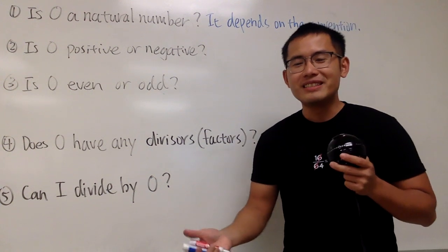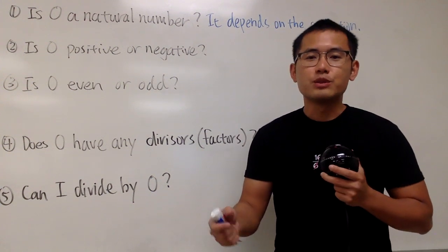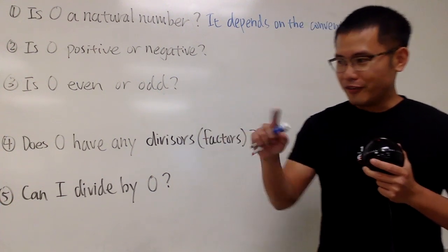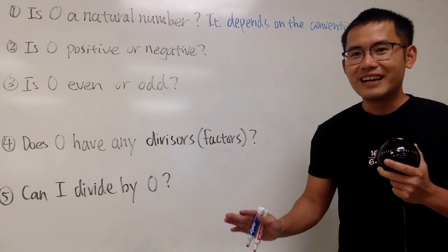Sometimes when you're doing number theory, sometimes the author will say, hey, we'll take zero as a natural number. Sometimes we'll say zero is not a natural number. The best thing for you guys to do is read the first page. That's pretty much it. And then just follow the convention, right?